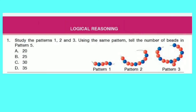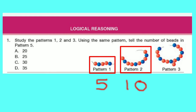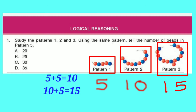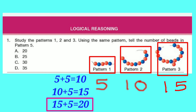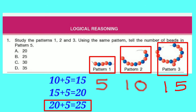Logical Reasoning. Question number 1: Study the patterns 1, 2 and 3. Using the same pattern, tell the number of beads in pattern 5. Pattern 1 has 5 beads, Pattern 2 has 10 beads, Pattern 3 has 15 beads. 5 beads are increasing in each pattern. So adding 5 to pattern 3 we get 20. Similarly, in pattern 5, 20 plus 5 equals 25. Option B is correct — there will be 25 beads in pattern 5.